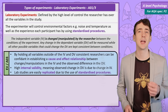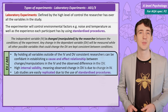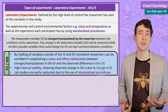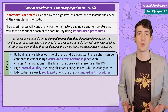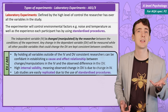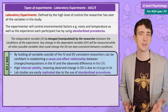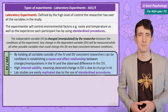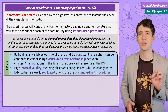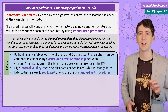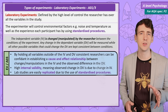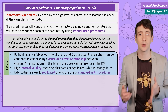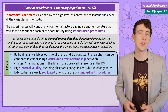Lab experiments are also highly replicable. You can give a list of standardised procedures — instructions for participants and variables to keep the same — to another researcher. If they can conduct it the same way and get similar results, your confidence in the validity of your findings increases.